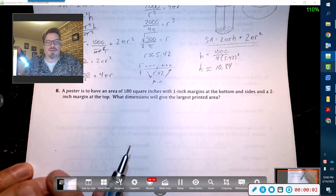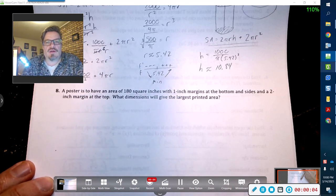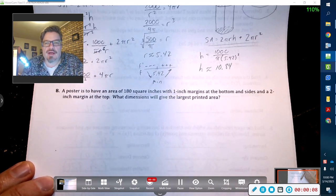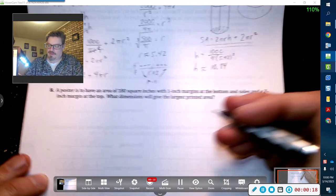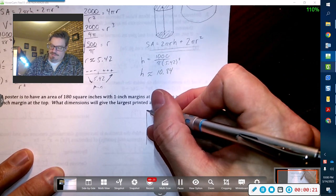Posters have an area of 180 square inches with one-inch margins at the bottom and sides. What dimensions will give the largest printed area? Alright, so draw a picture.